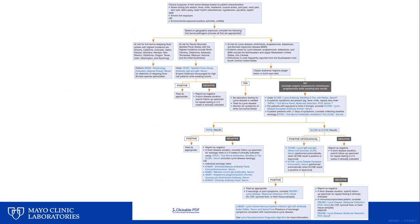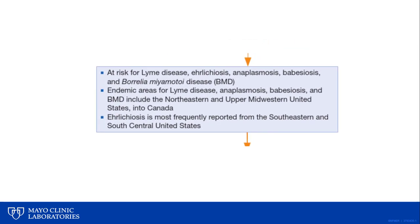The final branch of the tick-borne diseases testing algorithm is perhaps the most complicated and involves guidelines for testing for some of the most common pathogens, including Borrelia burgdorferi, the causative agent of Lyme disease, Ehrlichia species, Anaplasma phagocytophilum, Babesia species, and Borrelia miyamotoi. Many of these pathogens are transmitted by the same tick species, primarily Ixodes ticks, and as a result they have similar areas of endemicity. Co-infections are possible, so testing for multiple pathogens is sometimes important to consider.